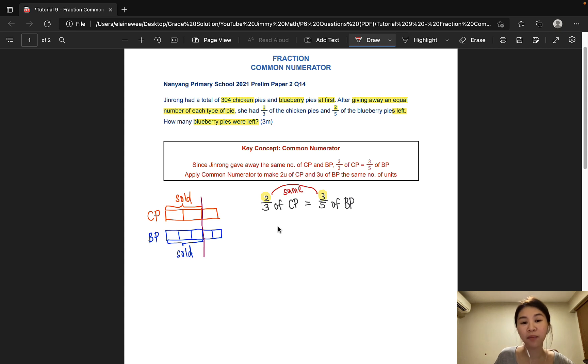And it can be easily done simply by multiplying this entire fraction by three and multiplying this fraction by two. So we have six units here and here. So let's go ahead and do that.